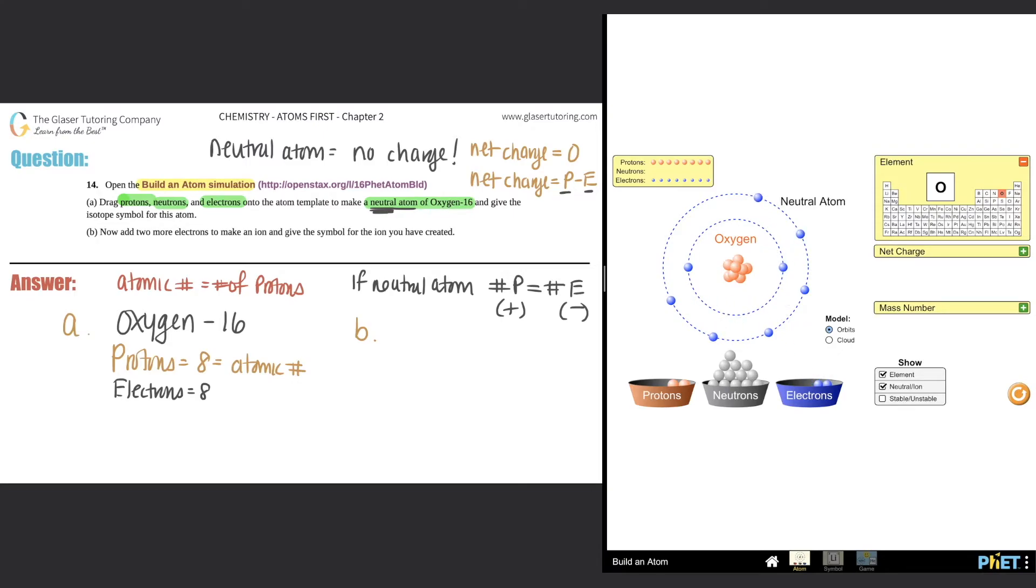Now we just want the number of neutrons. They're telling us that it's oxygen-16. This 16 obviously does not represent the atomic number. This 16 will represent the mass number.